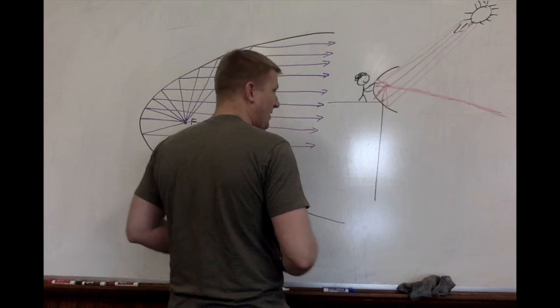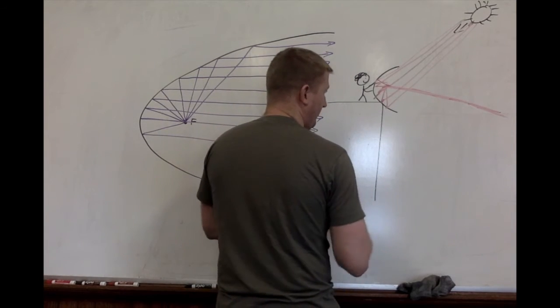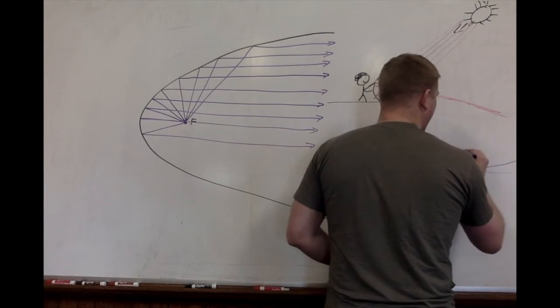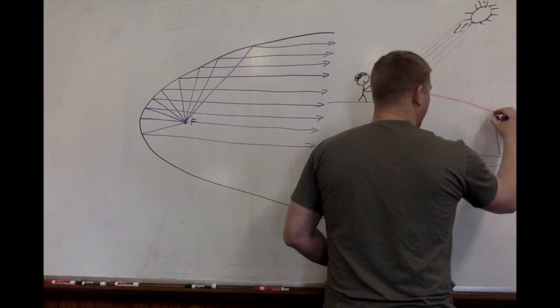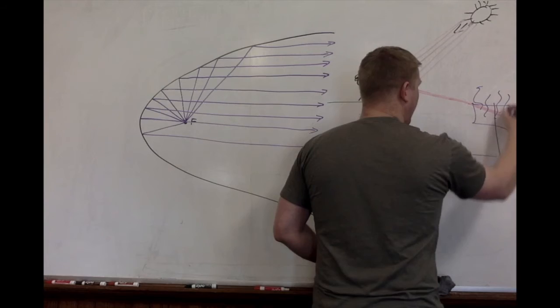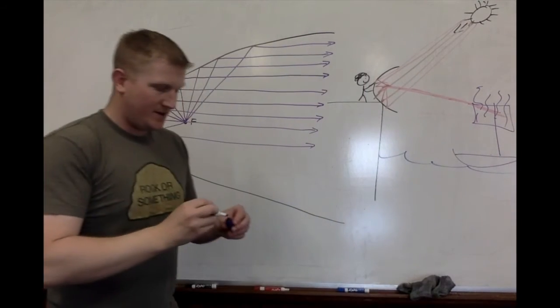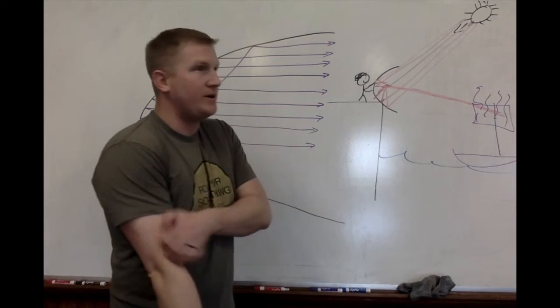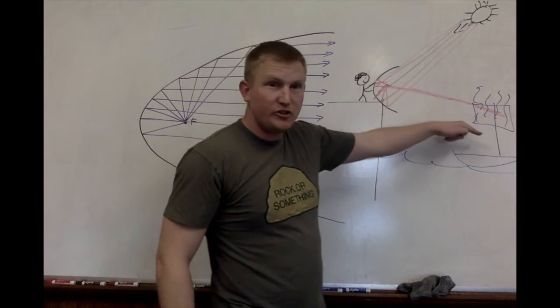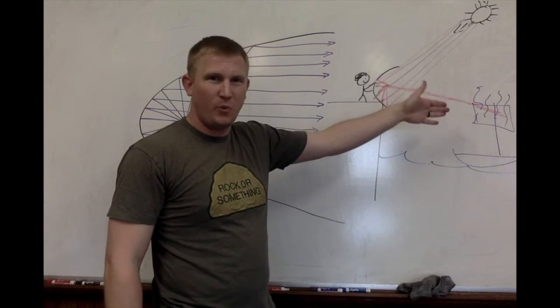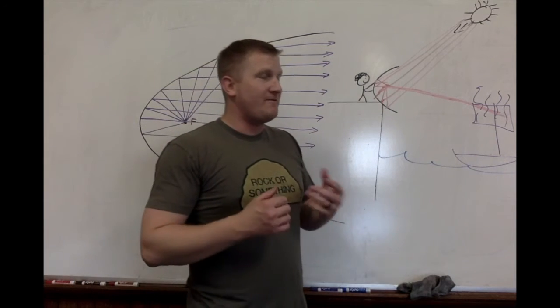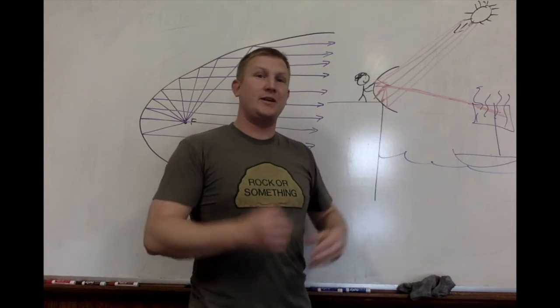And he can direct that beam of light wherever he wants, even to the sails of a ship, of the enemy, off the coast, and catching them on fire. Archimedes used a parabolic mirror to capture the sunlight, focus it into a single beam, and then lit ships on fire while they're away from the island at sea. This was obviously very frightening. Imagine being on a boat and having it spontaneously combust.